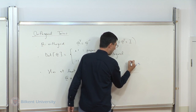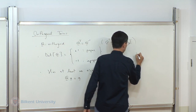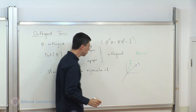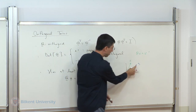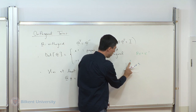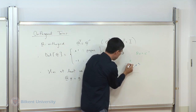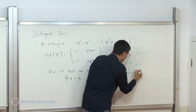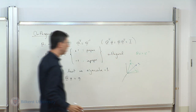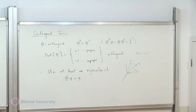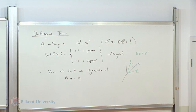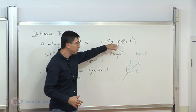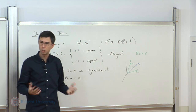An improper orthogonal tensor corresponds to some sort of reflection, which you cannot obtain through physical rotation in 3D space. The rotations we are interested in are proper, meaning physical rotations. Without exception, whenever we see an orthogonal tensor in this course, it is going to be proper orthogonal.